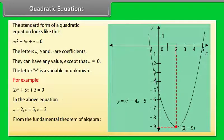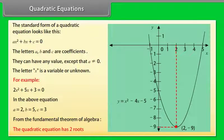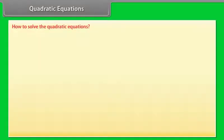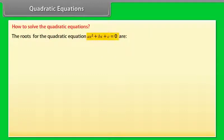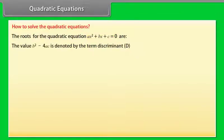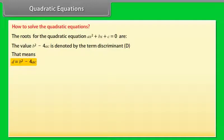From the fundamental theorem of algebra, we can deduce that the quadratic equation has two roots. The value B squared minus 4AC is denoted by the term discriminant D. That means D is equal to B squared minus 4AC.